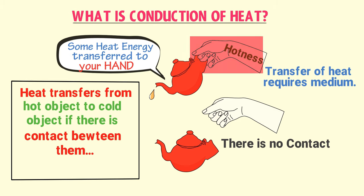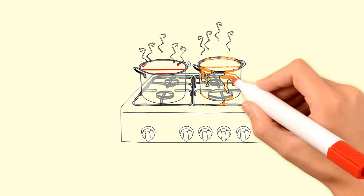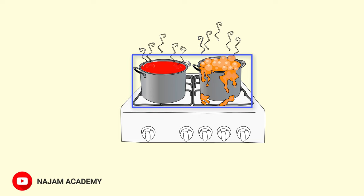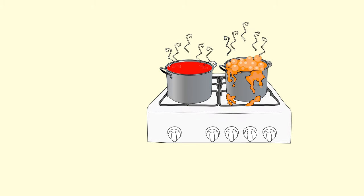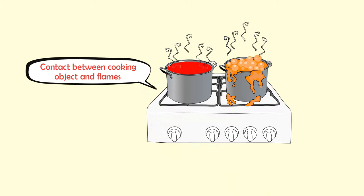Here, your hand is cold, and when you touch the hot object your hand provides a medium for the heat energy, which then travels toward your hand and you feel the hotness. Another example: when you are cooking food, you always place the frying pan or pot directly above the fire or flames. You do this because there is contact between the cooking object and the flames, and this contact provides a medium for the heat energy of the flames to transfer to your cooking object, cooking the food.